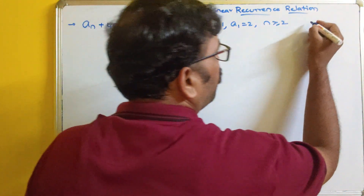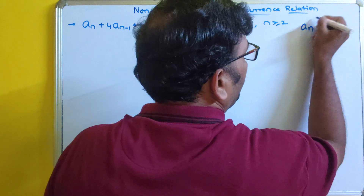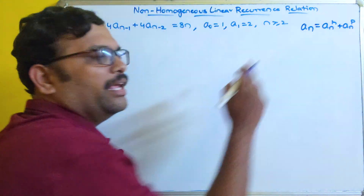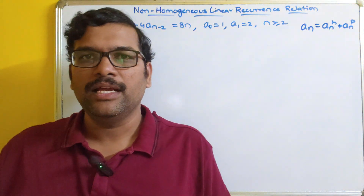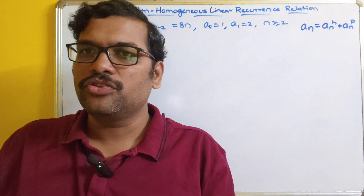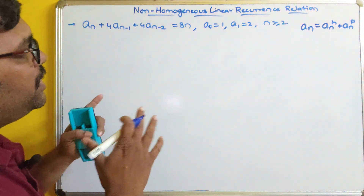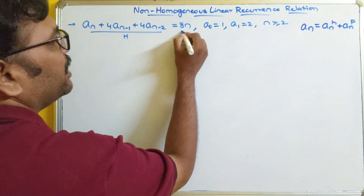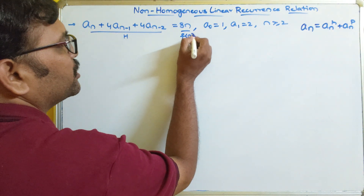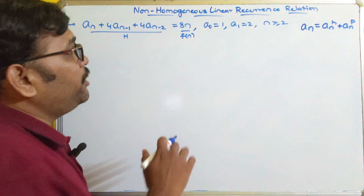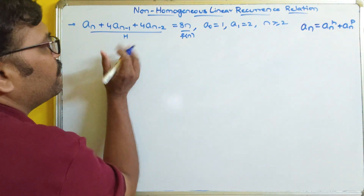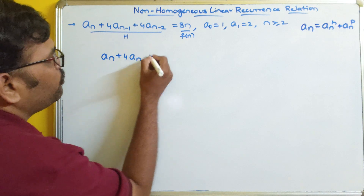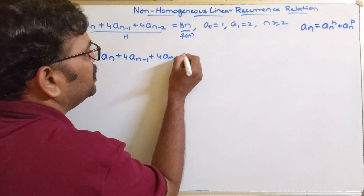We know that the general solution for a non-homogeneous recurrence is a_n = a_nh + a_np, where a_nh is the general solution of the homogeneous part and a_np is the particular solution. Now we need to differentiate these two things. So we write one part as the homogeneous and the other as f(n), some function of n. We take the equation: a_n + 4a_{n-1} + 4a_{n-2} = 0 as the homogeneous part.